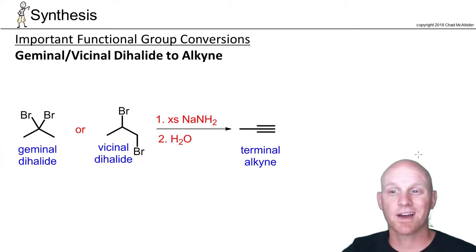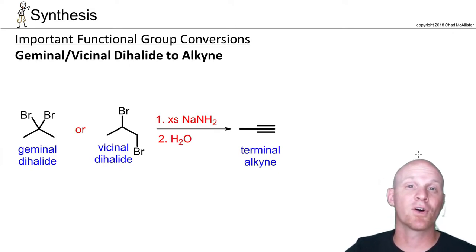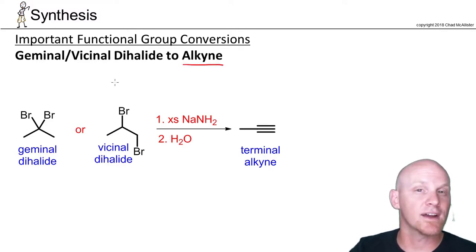The next functional group conversion we'll look at is converting an alkane into an alkyne. To convert that alkane into alkyne, we've got to have two leaving groups. So technically it's not an alkane, it's a dihalide here. The two leaving groups have either got to be on the same carbon like they are here, and we'll call that geminal. Or they've got to be on adjacent carbons and we'll call that vicinal.